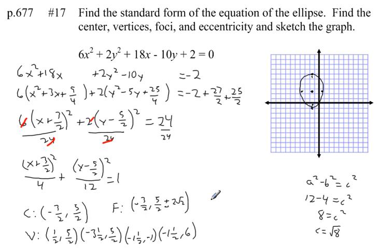Last, my eccentricity. Eccentricity is defined as the ratio of c over a. Well, c we found was the square root of 8, or 2 squared of 2. a, what's the bigger of these two quantities, so that's going to be 12. So my eccentricity, I can reduce that and write it as the square root of 2 over 6. So there's my center, vertices, foci, eccentricity, and graph of this ellipse.